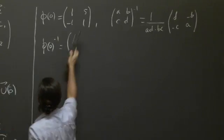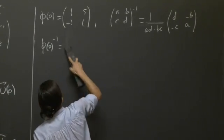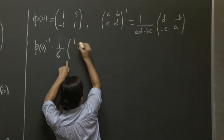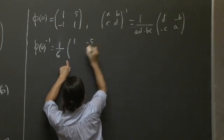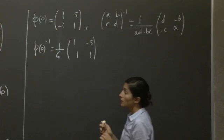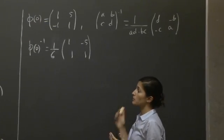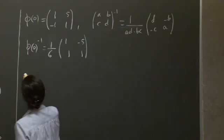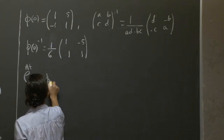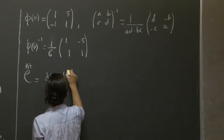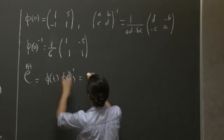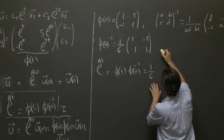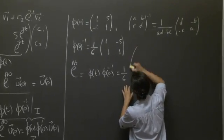Here, our determinant is basically 1 + 5, which is 6, so we have 1/6. Then the entries are simply [1, -5; 1, 1]. Now we're just left with a multiplication of two matrices to get our matrix exponential. Our matrix exponential would give us this 1/6, and we now have to multiply the entries. I'm not going to rewrite everything, I'm just going to use the space here.